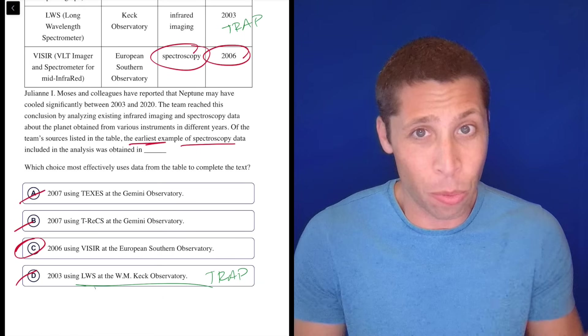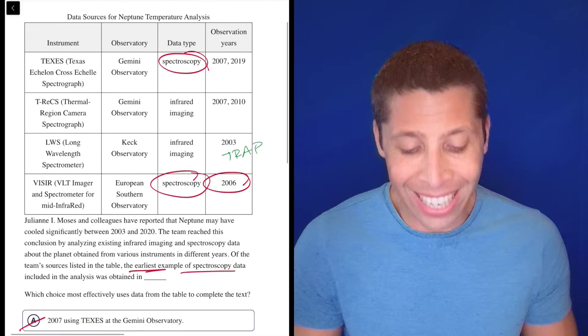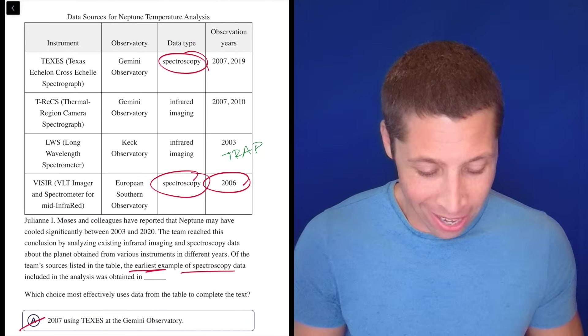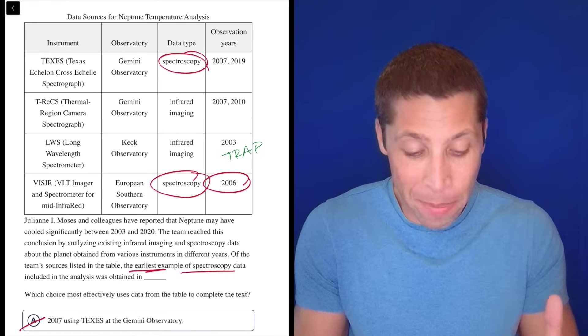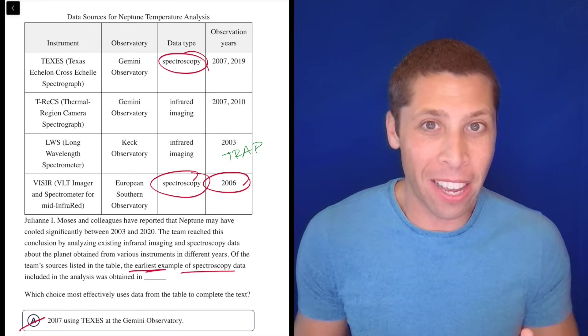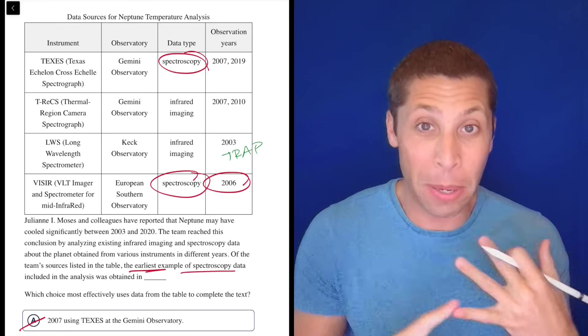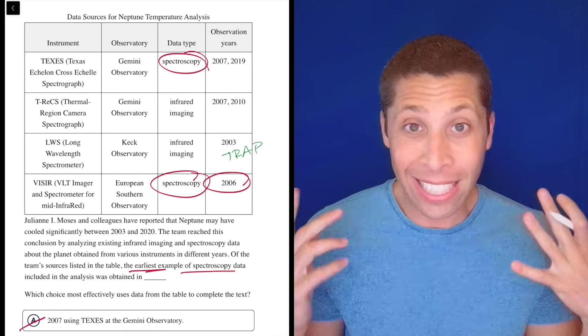It's not like these words are hard. Spectroscopy is not hidden somewhere in this chart. It's in a column where they say data type. And the only words in any of the cells of that column are either spectroscopy or infrared imaging. It's not buried, guys.